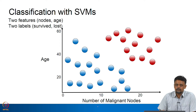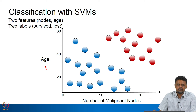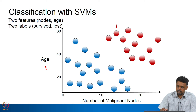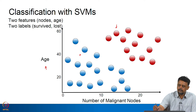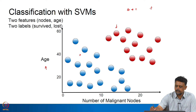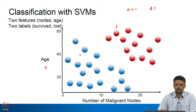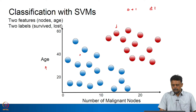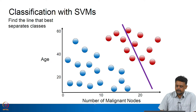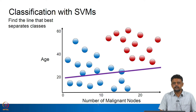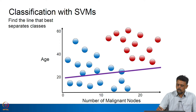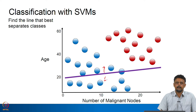We will consider a slightly more complicated 2D example so we can illustrate it better — where we have two features: number of malignant cancerous nodes and the age of the patient. We are trying to predict survival: the patient is lost or the patient survives, denoted by red and blue dots. In the case of SVMs, we shift from 0-to-1 classification to plus-minus-1. So in logistic regression it is class 0 or 1; in SVMs the class labels are minus 1 and plus 1.